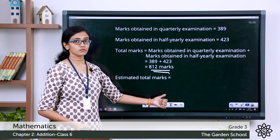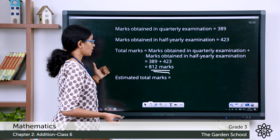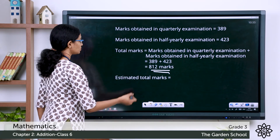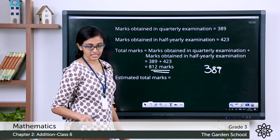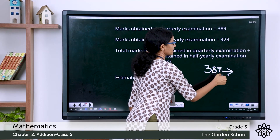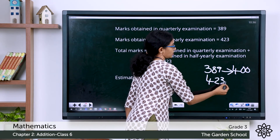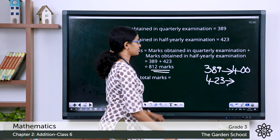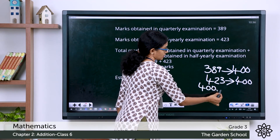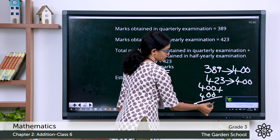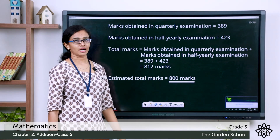To find the estimated total marks, let's round off each of the marks to the nearest hundred. 389 rounded up to the nearest hundred gives 400, and 423 rounded up to the nearest hundred gives 400. So the estimated sum is 400 plus 400, which is 800. The estimated total marks equals 800 marks.